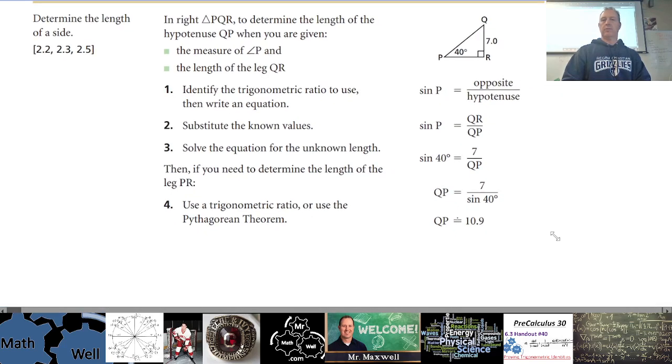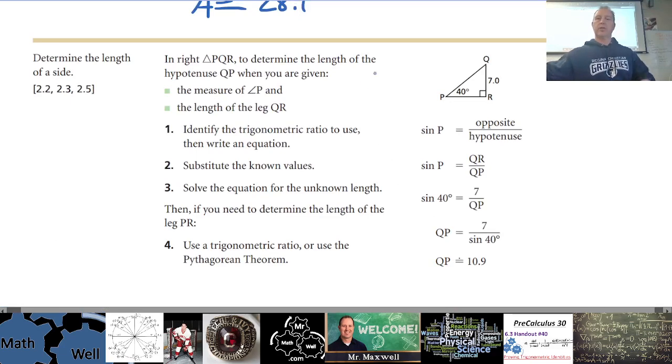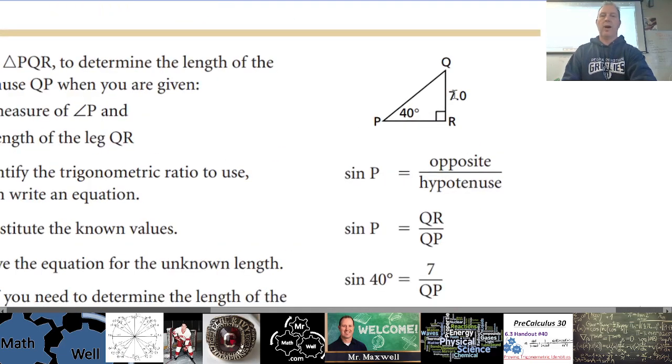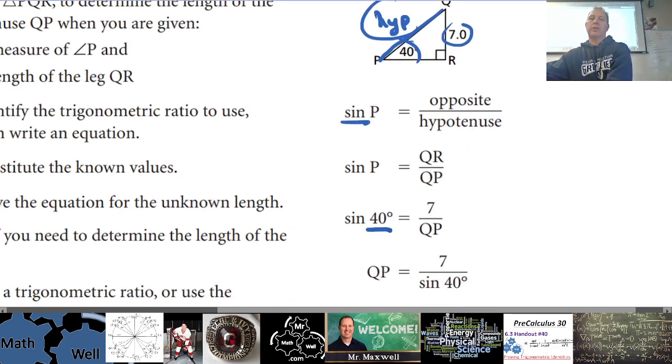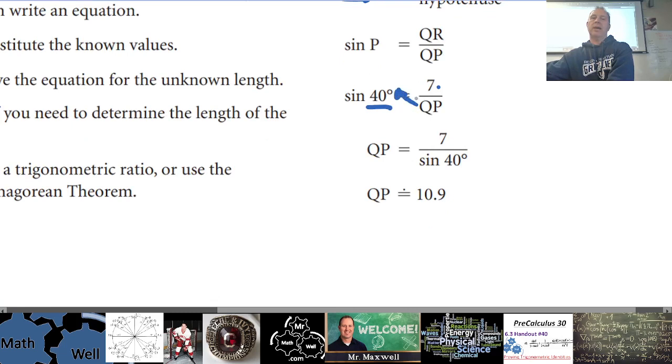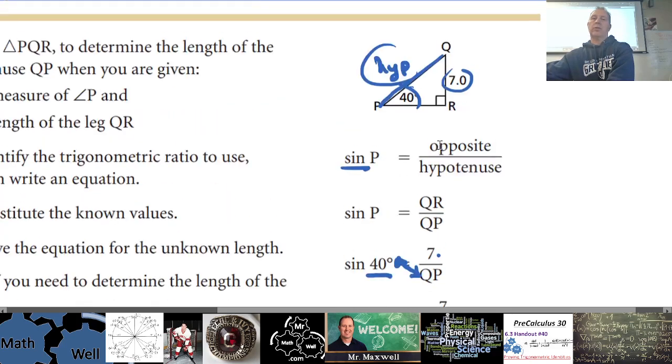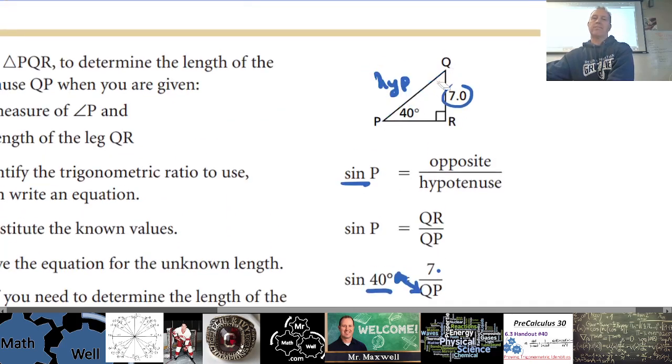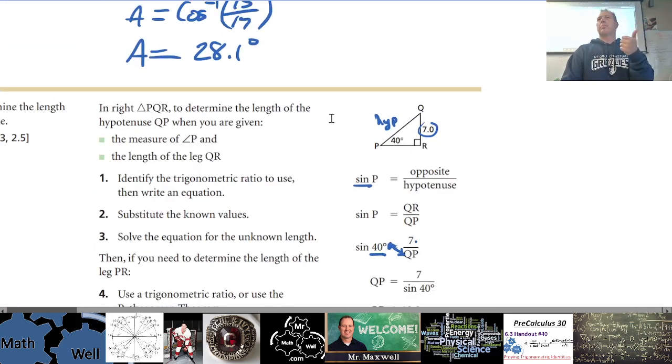So if you're given this situation, I'll zoom in, where you're given an angle of 40 and an opposite side of 7, if you wanted to find out what the hypotenuse was here, this length right here, you could easily do that. You could use the opposite hypotenuse, that's the sine ratio. So sine of the angle equals opposite over hypotenuse. You just plug in all the given values. So that is sine of 40 degrees equals 7 over our missing side hypotenuse. And again, you can rearrange this, cross multiply and divide, they switch spots, and 7 divided by sine 40 gives you the length of the hypotenuse, or QP in this diagram.